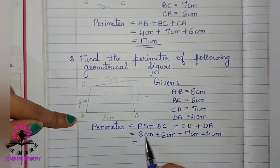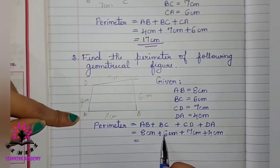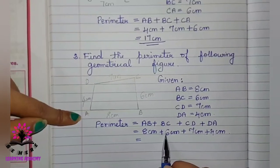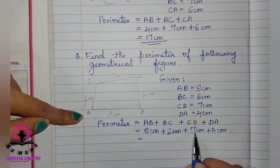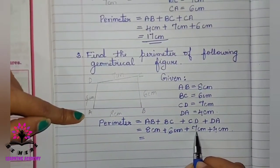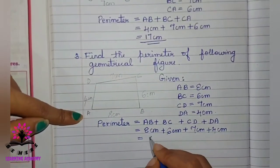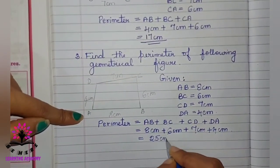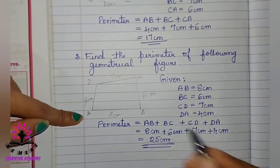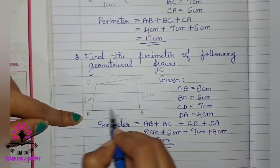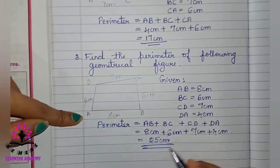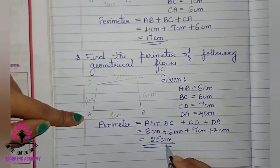Then, find the sum. 8 plus 6 is 14 cm. 14 plus 7 cm is 21 cm. 21 cm plus 4 cm is 25 cm. So, the perimeter of this given geometrical figure is 25 cm.